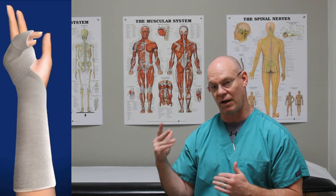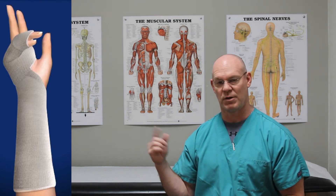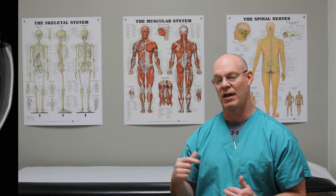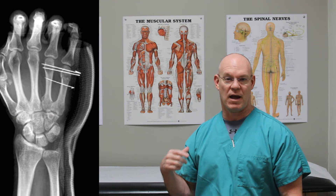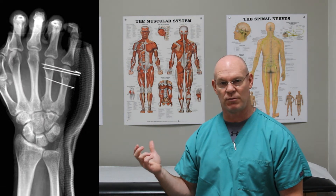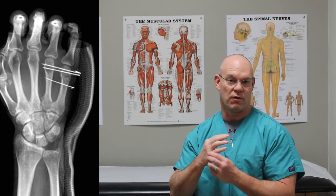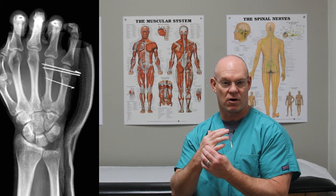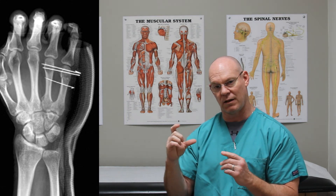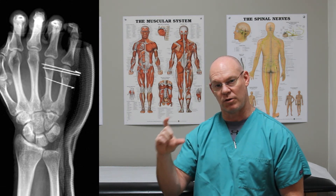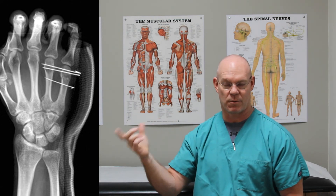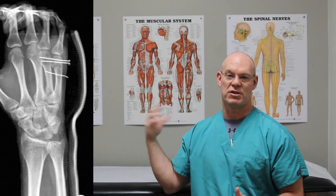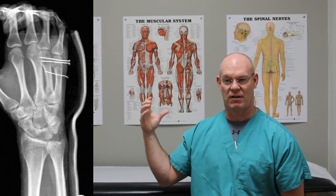This is called an ulnar gauntlet cast, and that's what you'd get if the fracture was stable. This patient's fracture was non-stable when I took it through the range of motion, so they get this instead. This is the AP of what we call percutaneous pinning — we drive pins through the skin, through the fifth metacarpal, and through the fourth metacarpal. The pin holds the fifth metacarpal reduced with the stability of the fourth metacarpal. Here is an oblique x-ray of the same thing, and you can also see the splint in this patient's post-op x-rays.